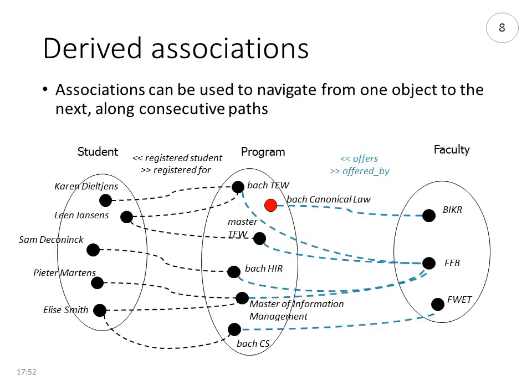The explicitly modeled associations allow us to navigate from one class to another, and in this way they give rise to derived associations. For example, in this schema we can navigate from student to program to find all the programs a student is registered for, and then from program to faculty to find the faculties those programs belong to. This allows us to navigate implicitly from student to faculty via the programs the student is registered for — obtaining implicitly modeled derived associations.